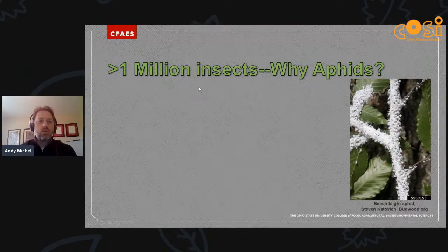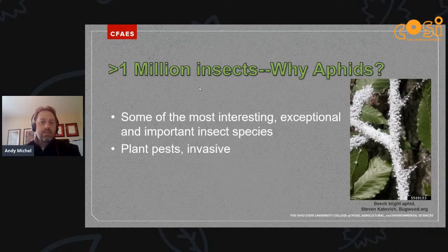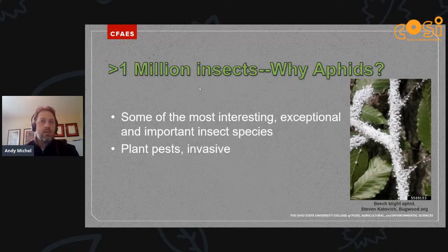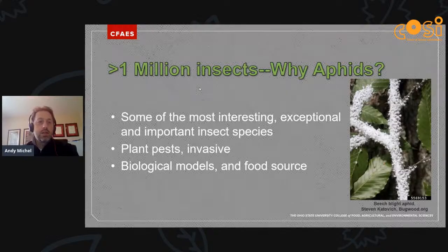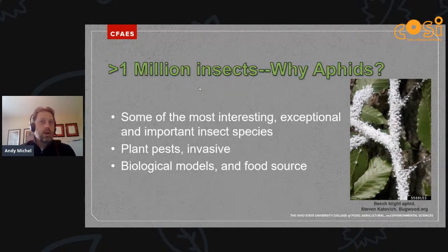So, out of the over one million insects, why are we interested in aphids? Aphids are some of the most interesting, exceptional, and important insect species. Often we think of them as plant pests, and for the most part, most aphids are plant pests. A lot of them are invasive. Aphids are some of the most invasive insects among all insect species and they can have a rapid reproductive life cycle. But they are also important as biological models to understand evolution, interactions with plants, and genetics. They are also an important food source for many other species, especially other insects and higher trophic levels.